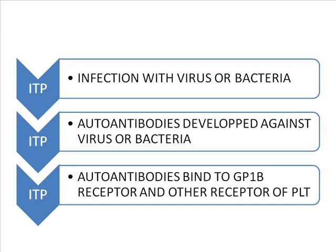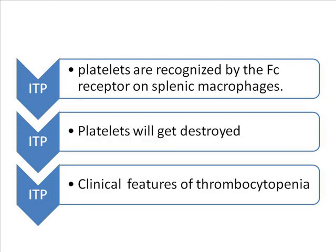A normal antibody should not act against our own body cells. But in ITP, the antibodies which are produced against the virus or bacteria will act on self-cells — our own body cells. In ITP specifically, they act against the GP1B receptors of the platelet. These antibodies bind to the platelets and form an antibody-antigen complex, that is, an antibody-platelet complex.